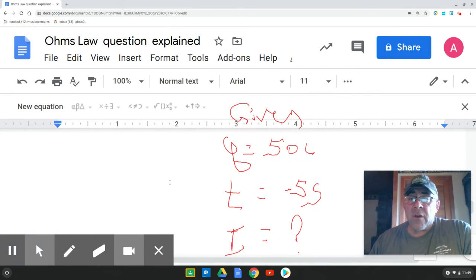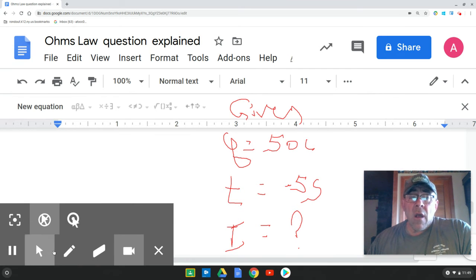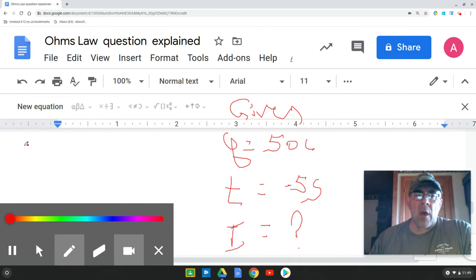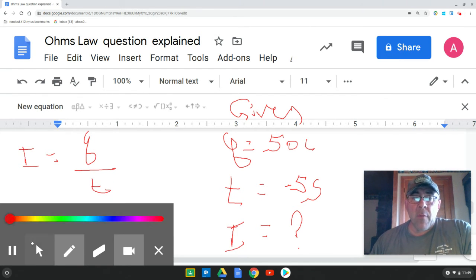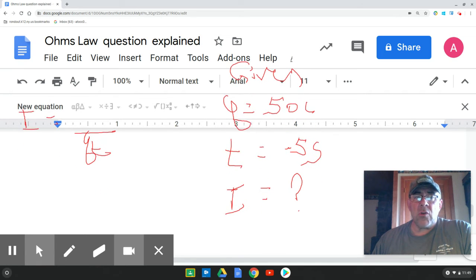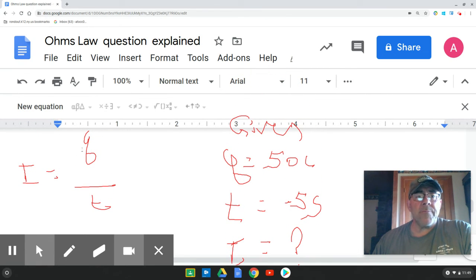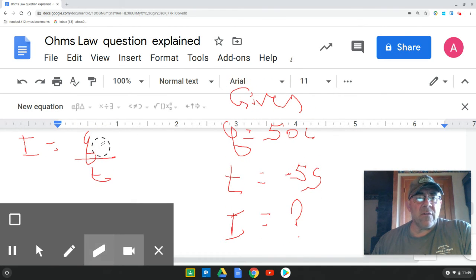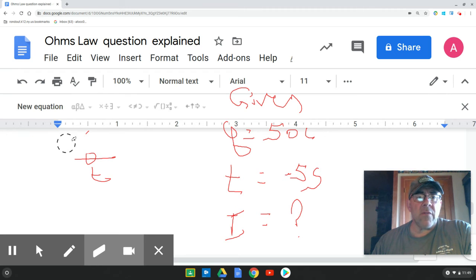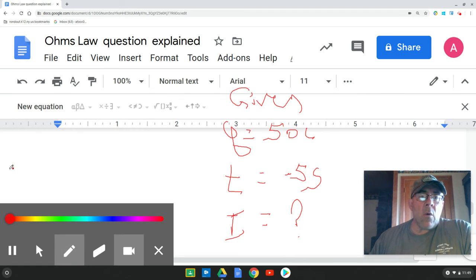Now, do I have a formula for current? Do we have a formula that says I equals something? Well, yeah. I equals Q over T. Now, can I fill in for my unknowns? I think I can. Do I know how much? I'm going to get my eraser out because this isn't behaving. So we're going to erase all this. You can go back if you want to see.